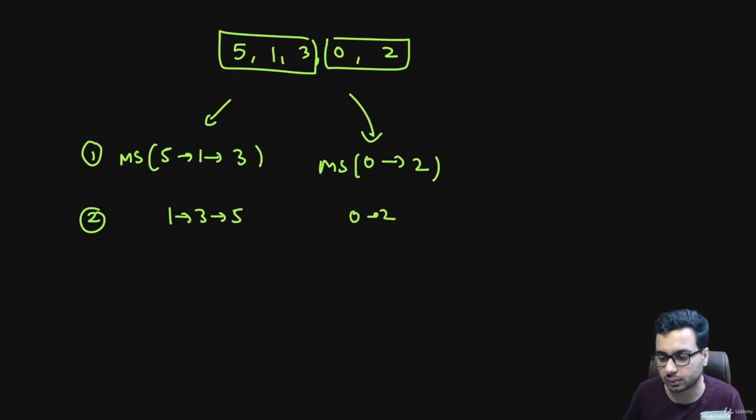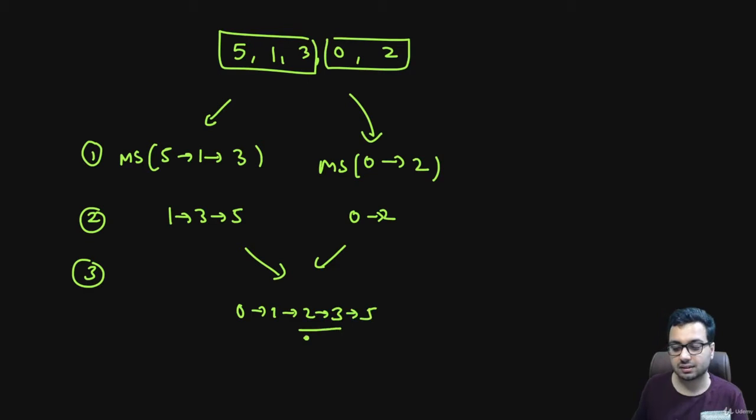Now what is the third step? You already know how to merge two sorted linked lists, so just merge them into a single list. You will get 0, 1, 2, 3, 5, and that's it. Those are the three steps you need to perform.